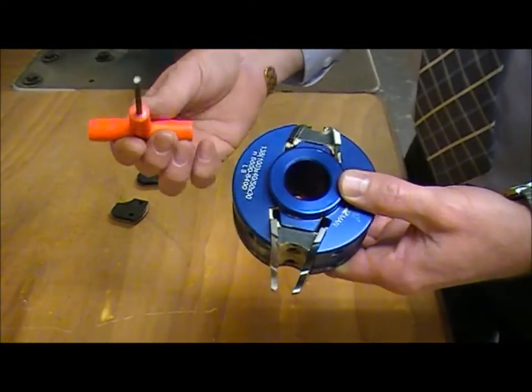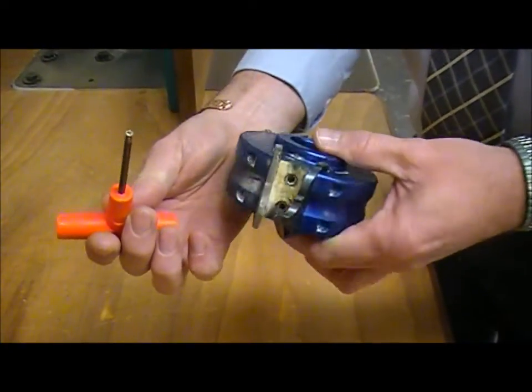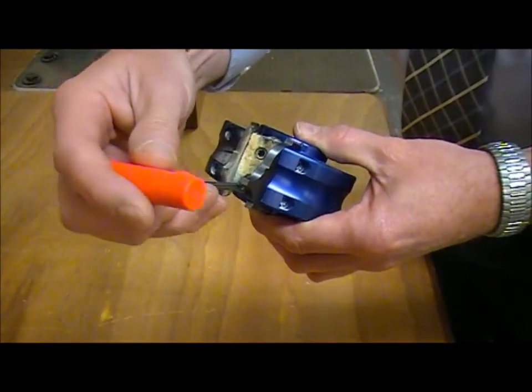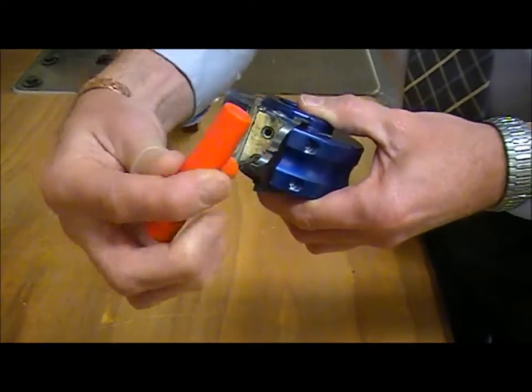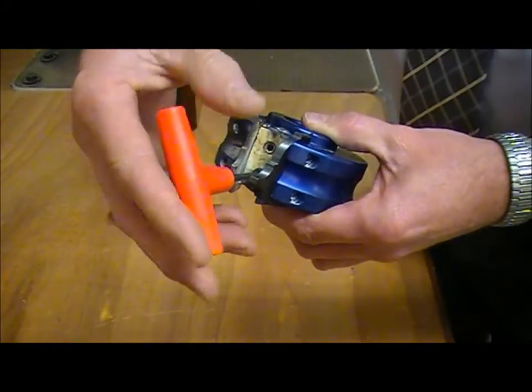We're going to use an allen key, and one with the orange T handle is far more comfortable to use. We need to loosen off the allen bolts inside the wedge block.